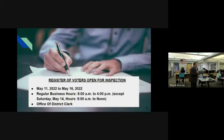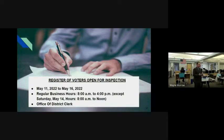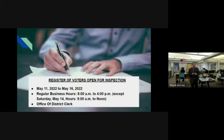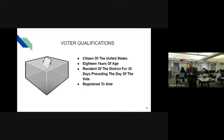Between May 11th and May 16th, we are required by regulations to have available for review any citizen who wants to inspect the register of voters. On Saturday, May 14th, from 9 to noon, the district clerk's office will be open for citizens to come and review the voter registry. In order to vote on the school budget and Board of Education election, you need to be a citizen of the United States, 18 years of age, a resident of the district for at least 30 days prior to the day of the vote, and registered to vote.